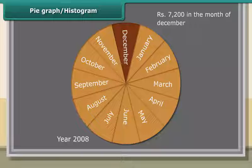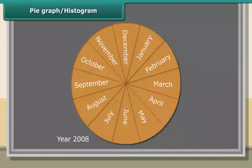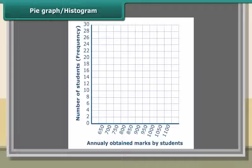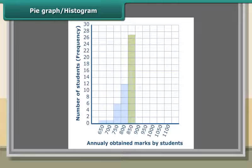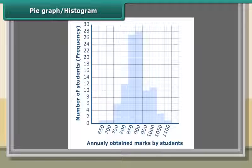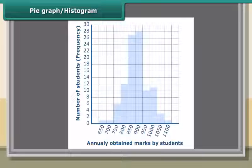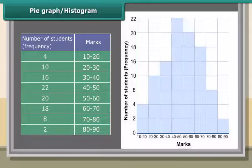A histogram is a graphical representation of a frequency distribution in the form of rectangles with class intervals as bases and heights proportional to corresponding frequencies, such that there is no gap between any two successive rectangles. The following table gives the marks scored by hundred students in an entrance examination.